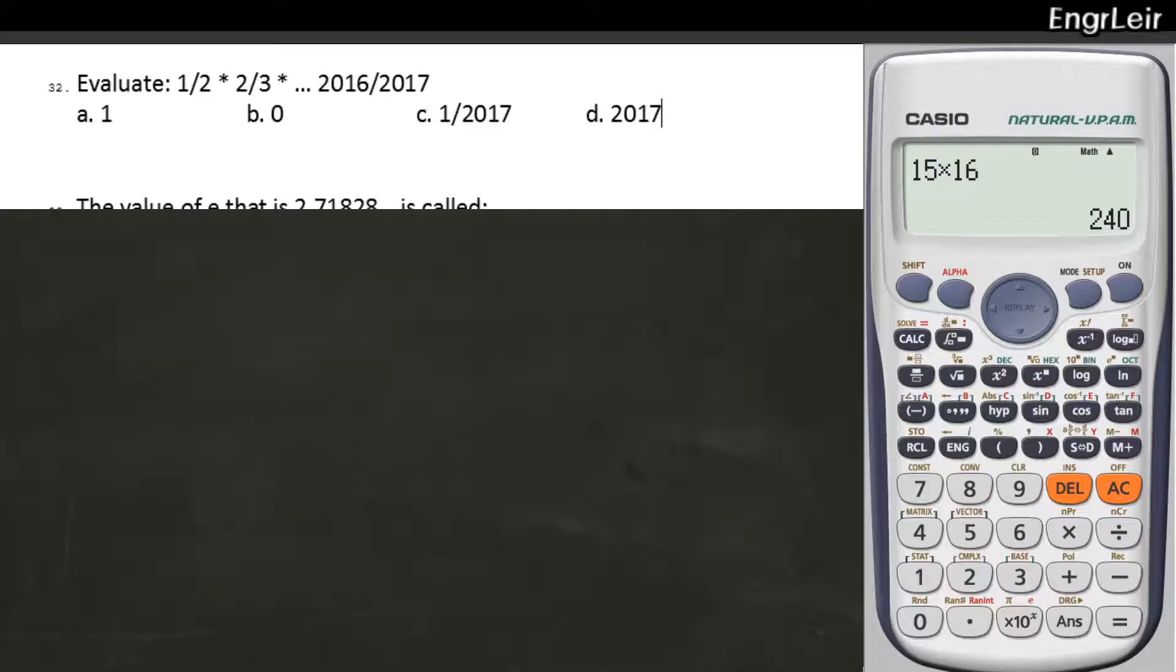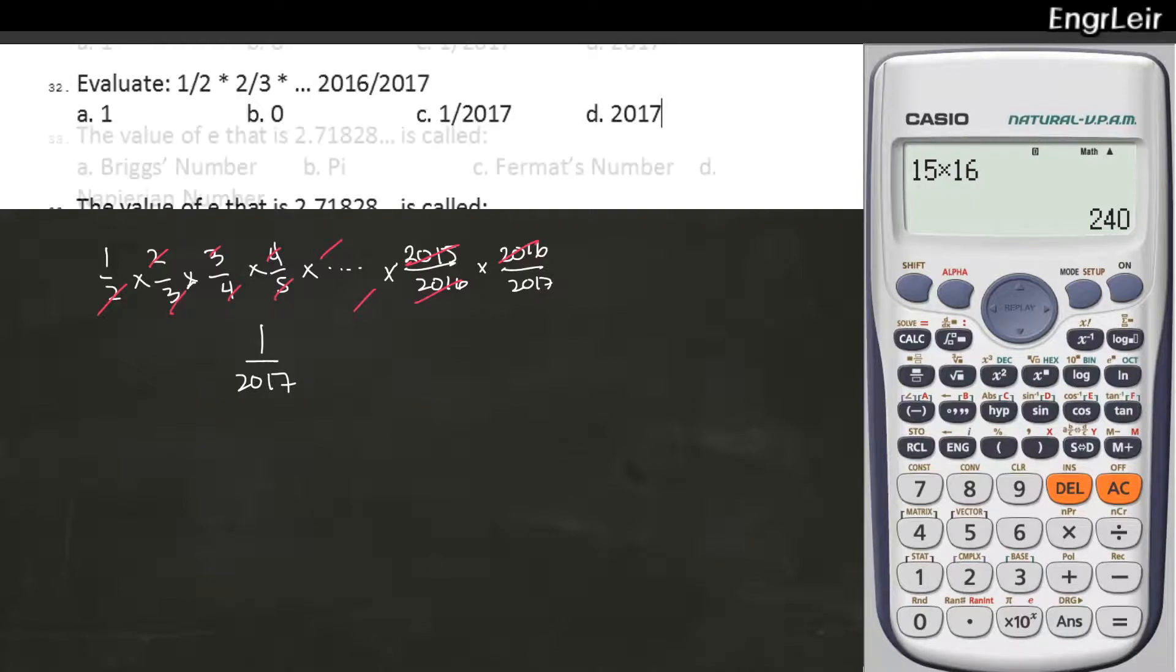Evaluate 1 half times 2 third times, and so on, times 2016 over 2017. So lahat yan may partner. Pag sinulat ko dito, I will have 1 half times 2 third times 3 over 4 times 4 over 5, and hanggang maging 2015 over 2016 times 2016 over 2017. So nakamultiply lahat ito. So ang mapansin mo, cancel yung 2, cancel yung 3, and so on. Cancel yung 5 sa maging kapartner niya. Yung 2015, yung 2016. And ang matitira is 1 over 2017.